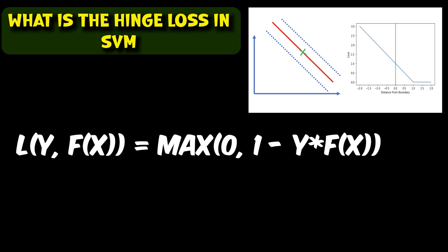The product y times f(x) can be seen as a measure of how well the prediction aligns with the true label. A large positive value of y times f(x) indicates a correctly classified point that is far from the decision boundary.